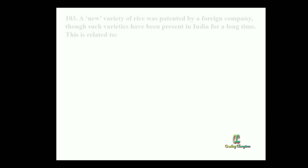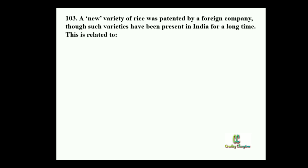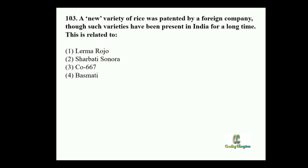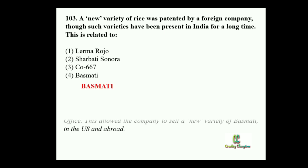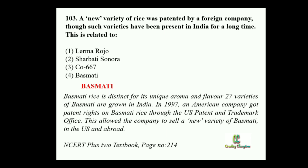Next question: A new variety of rice was patented by a foreign company, though such variety had been present in India for a long time. This is related to which option? Option 1: Lerma Rojo. Option 2: Sharbati Sonara. Option 3: CO667. Option 4: Basmati. This is a direct question given as such in your NCERT textbook. The answer is Basmati. CO667 is also a rice variety, but Lerma Rojo and Sharbati Sonara are varieties of wheat.